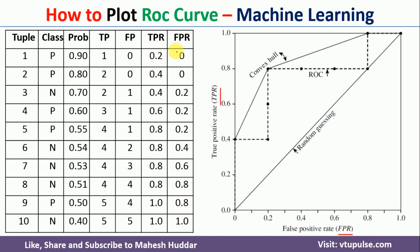Starting with FPR = 0 and associated TPR = 0.2, this is the first data point. The second one has FPR = 0 and TPR = 0.4. The next point is FPR = 0.2 and TPR = 0.4. The next one is FPR = 0.2 and TPR = 0.6. Similarly, we mark all these points and connect them to get the final ROC curve. If you want a convex shape, you can connect these points to get the final ROC curve.